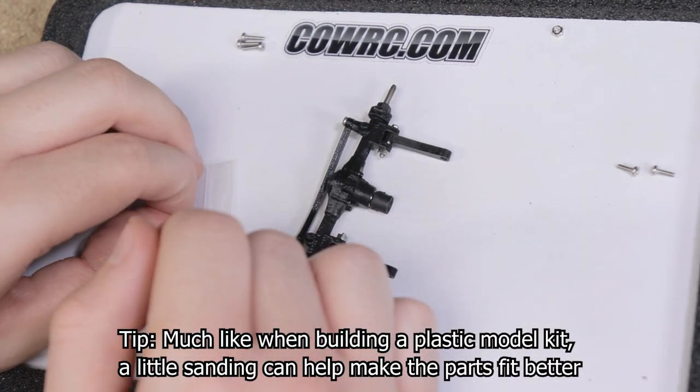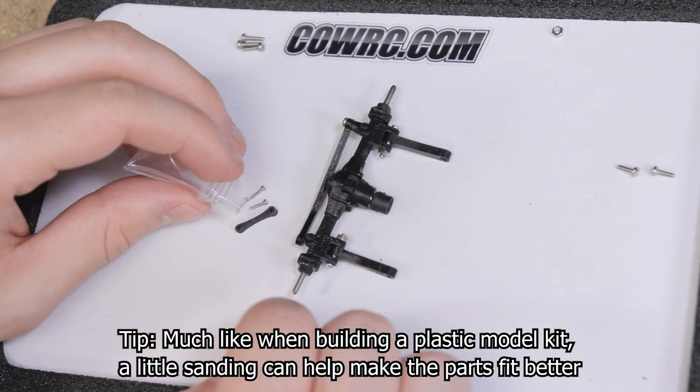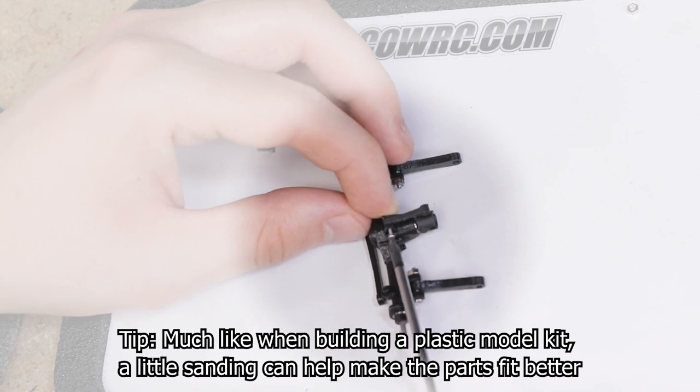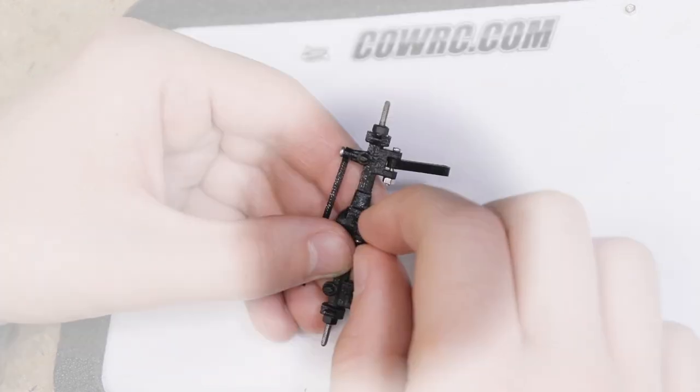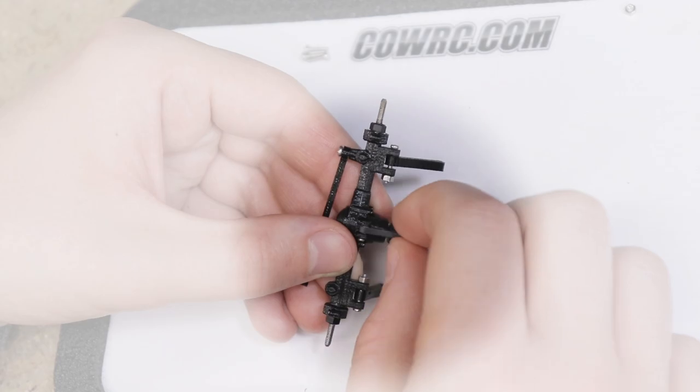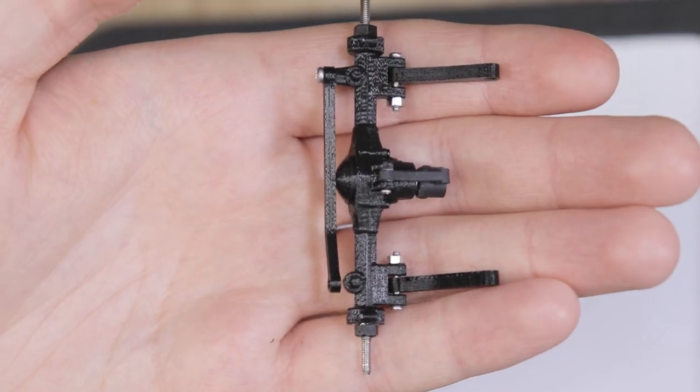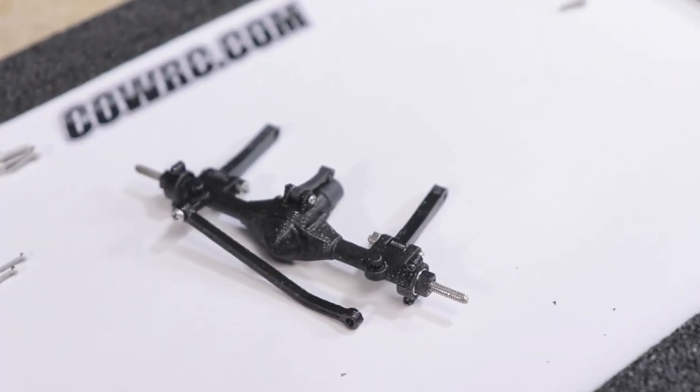Finally we can install the upper link. The thinner side of the upper link is the side that gets secured to the axle. Once again be sure not to over tighten it should be able to move up and down. Here's how your axle assembly should look with these parts installed.